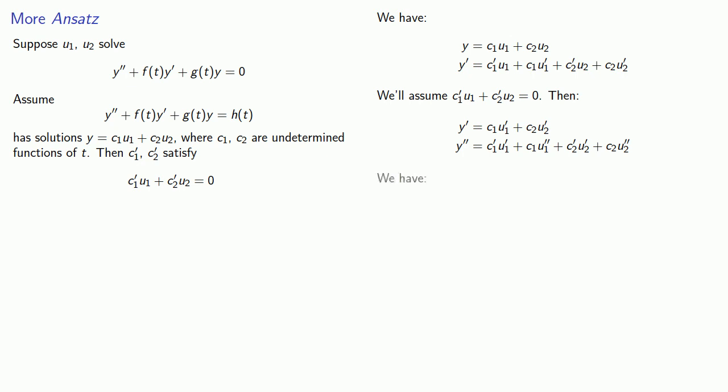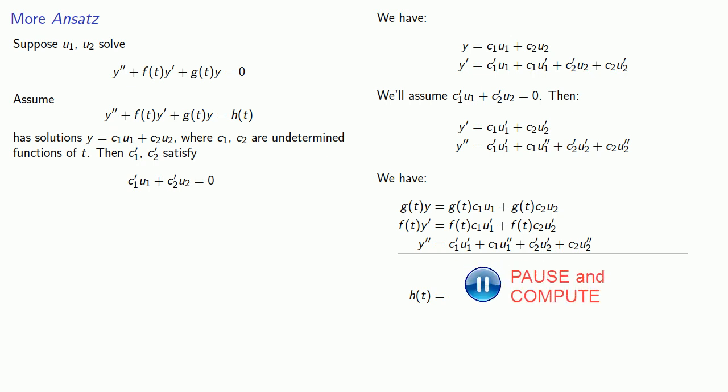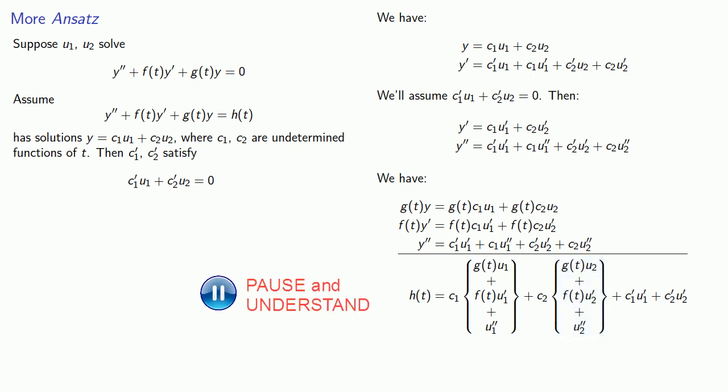We'll substitute our values into our expressions g of t y, f of t y prime, and y double prime. Adding up the left hand side should give us h of t. Since u1 and u2 solve the original homogeneous differential equation, this coefficient of c1 and this coefficient of c2 are both going to be zero. Our equation simplifies.